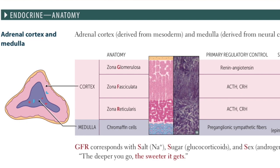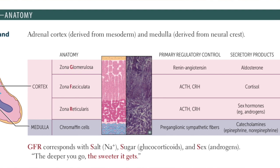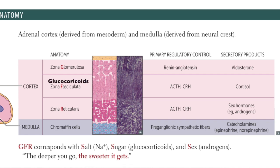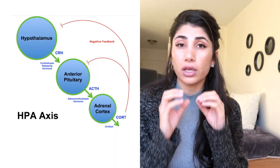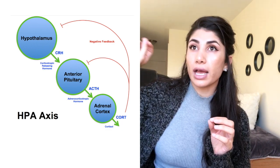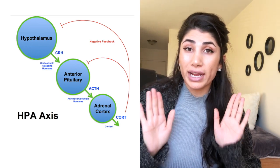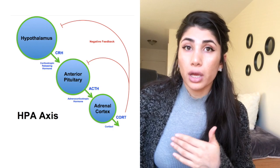The adrenal gland has the adrenal cortex and the adrenal medulla. The adrenal cortex is where we focus because it produces three things: sex hormones, glucocorticoids, and mineralocorticoids. ACTH stimulates cortisol production, which is a super important hormone — it feeds back to the hypothalamus and pituitary to stop producing more ACTH, essentially halting further cortisol production.